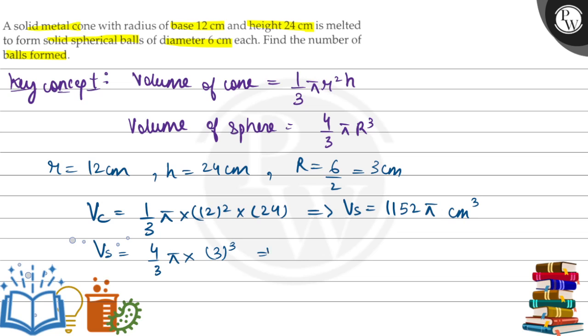And this is Vc, which represents 1152π cm³. Similarly, Vs represents 4/3 π × 3³, so Vs equals 36π cm³.